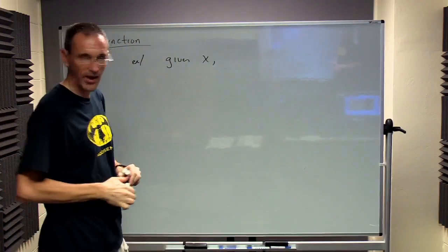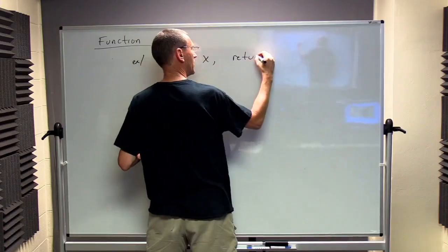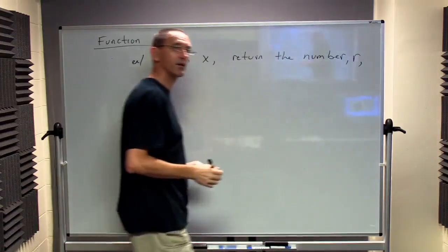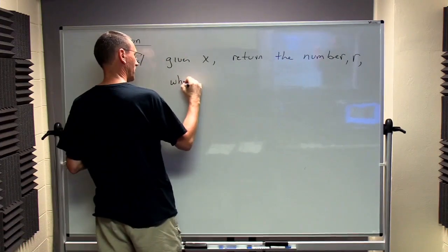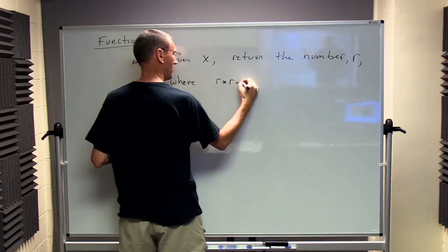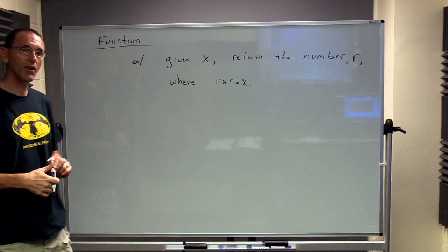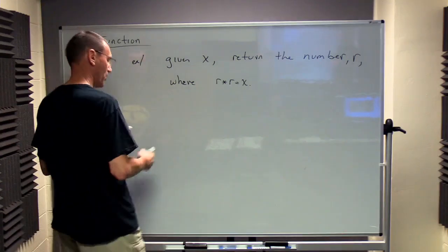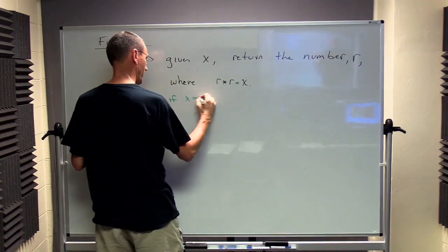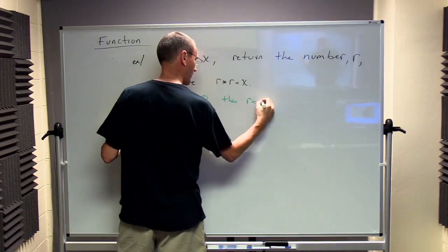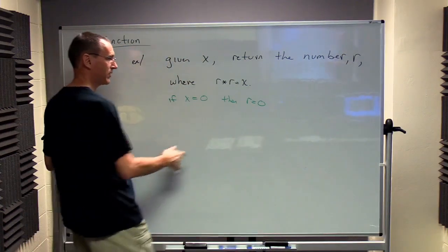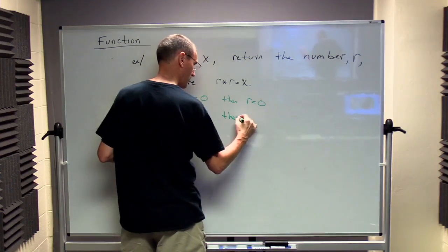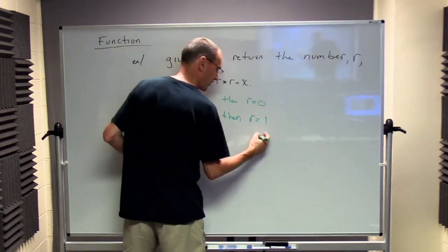Let's do another example. Suppose I give you a number X, and I'm going to return another number, we'll call it R. And what's special about R? R is going to be the special number that if I take R times R, I get X. And that's the number I'm going to return. So I give you X equals 0. Well, that has to be 0, because 0 times 0 is 0. So if I give you 1, well, it could be 1, right? Because 1 times 1 is 1.